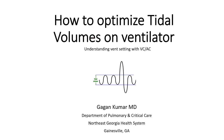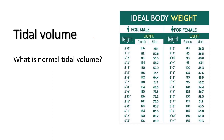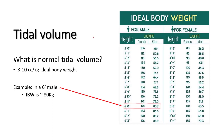Hello everyone, today we'll be talking about optimizing tidal volumes on the ventilator using volume assist control. Normal tidal volume is around 8 to 10 cc per kg ideal body weight. In a 6-foot male, the ideal body weight is 80 kg, so tidal volume is around 640 cc.